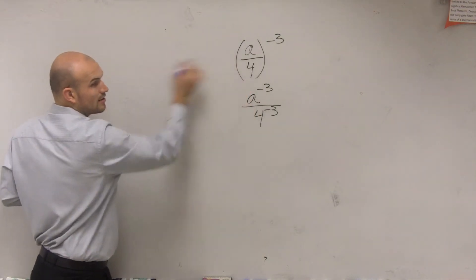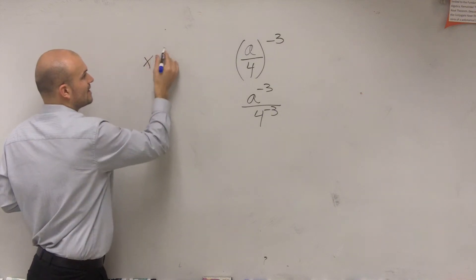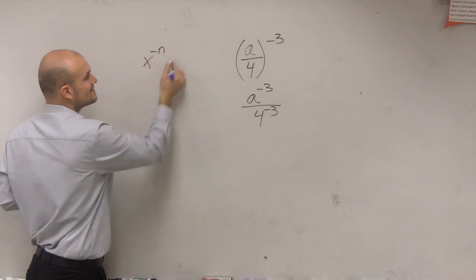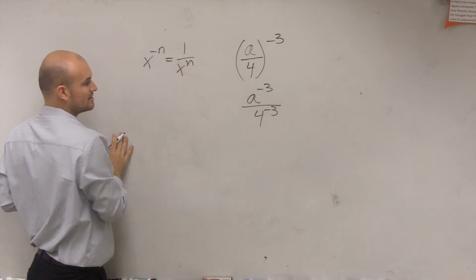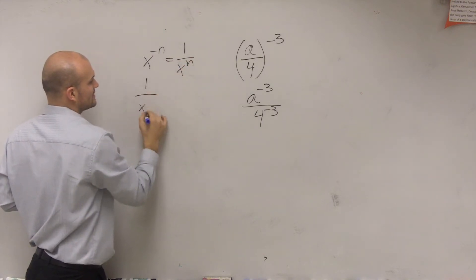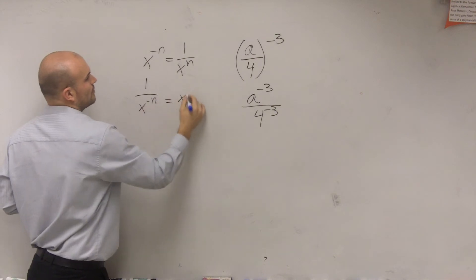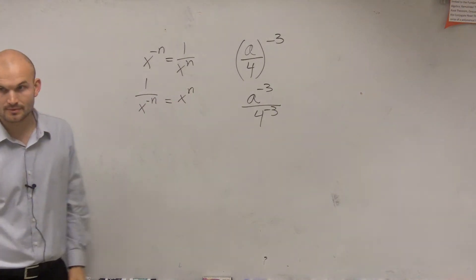This is the power of quotient property. Our negative exponent property states that if you have x to the negative n, to make that positive you put it in the denominator. And if it's already in the denominator and negative, you put it in the numerator.